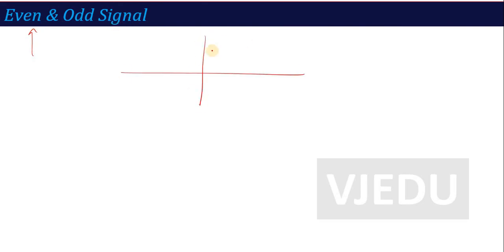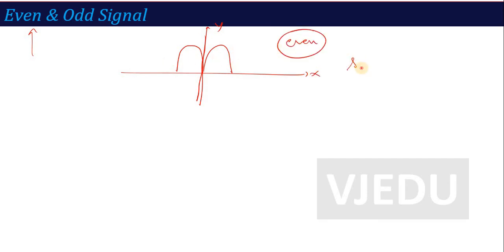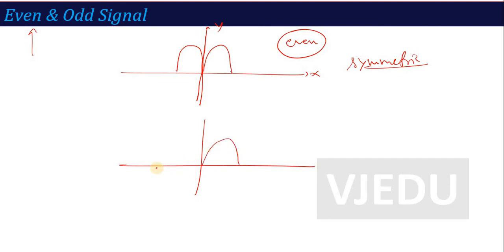If we talk about another category, we have even and odd signals. If a signal is symmetric along the y-axis — with the same signal on both sides — that type of signal is called an even signal, also called a symmetric signal. If the signal is anti-symmetric, it is called an odd signal.